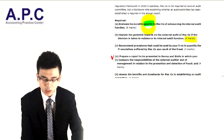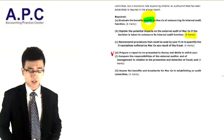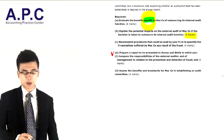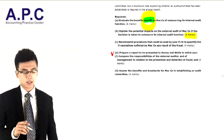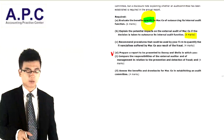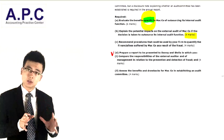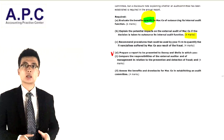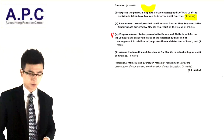Part C: recommend procedures that could be used by your firm to quantify the financial losses suffered by the company as a result of fraud. We need to look at what types of fraud actions have occurred to actually quantify the losses. Four marks — four points.